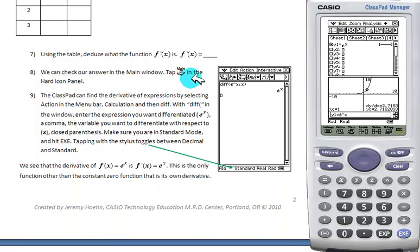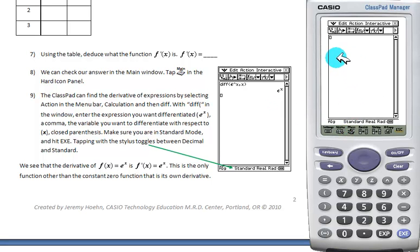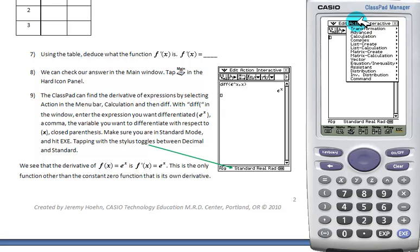We're going to check our answer by going to main. Main can be found in the hard icon panel here. We're going to differentiate e to the x with respect to x. So go to action, go to calculation, select derivative.